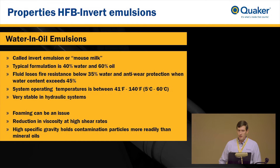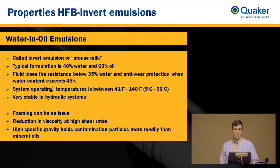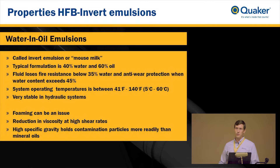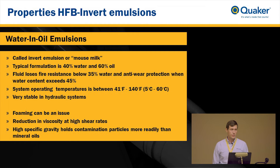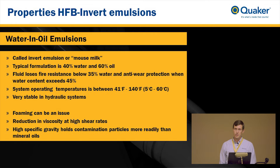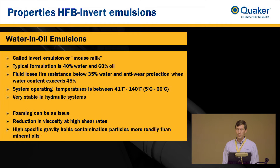The second category is HFB, the invert emulsion — about 40 percent water into 60 percent oil, the exact opposite of a regular emulsion, with water inside the oil mixture. This is probably the lowest used fire resistant hydraulic fluid. In the old days it was called mouse milk, and people used it underground in place of a mineral oil based hydraulic fluid.